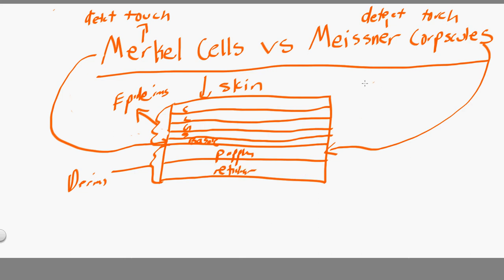Now, so the question is, what's the difference between the two? If they're both detecting touch, why do they have different names? Answer, because they're in different locations. The Merkel cells are in the epidermis, exactly in the stratum basale of the epidermis. That's where the Merkel cells are.